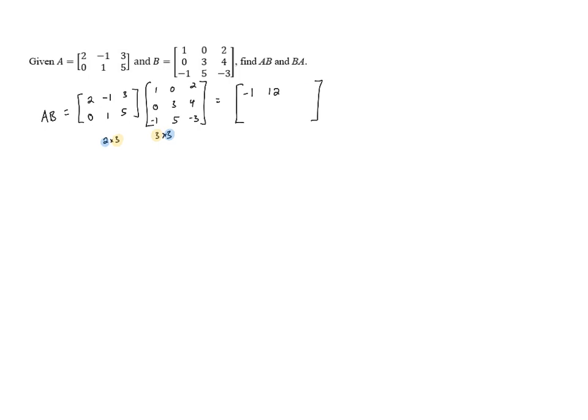Then for the next entry, it'll be the inner product of the first row and the third column. That gives us 4, negative 4, and negative 9. 4 minus 4 is 0, and then 0 minus 9 is negative 9.